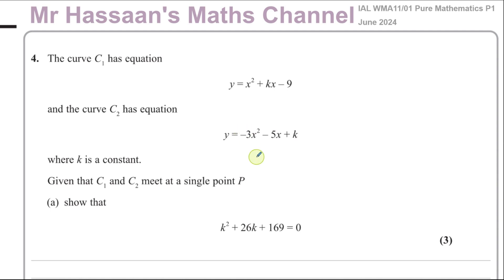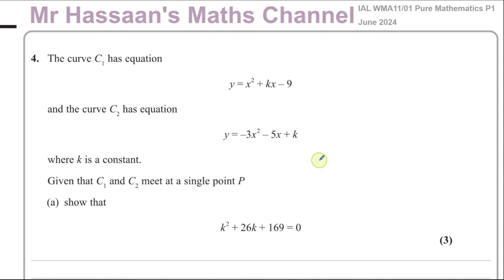In this question we're told about a curve y equals x squared plus kx minus 9, that's called curve C1, and a second curve C2, which is y equals negative 3x squared minus 5x plus k, where k is a constant. Given that C1 and C2 meet at a single point P, show that k squared plus 26k plus 169 is equal to 0.